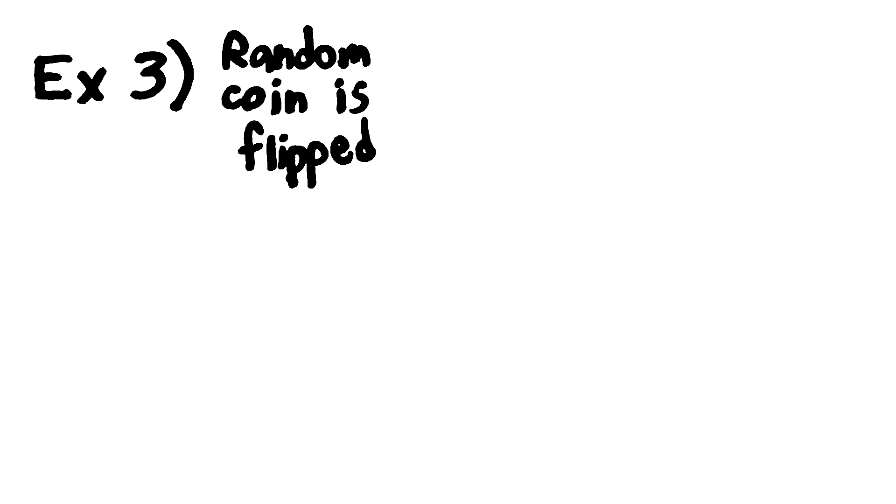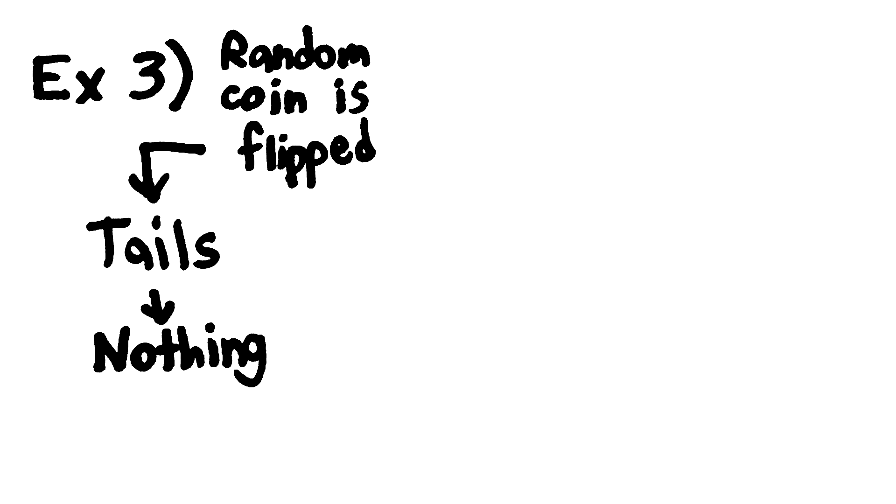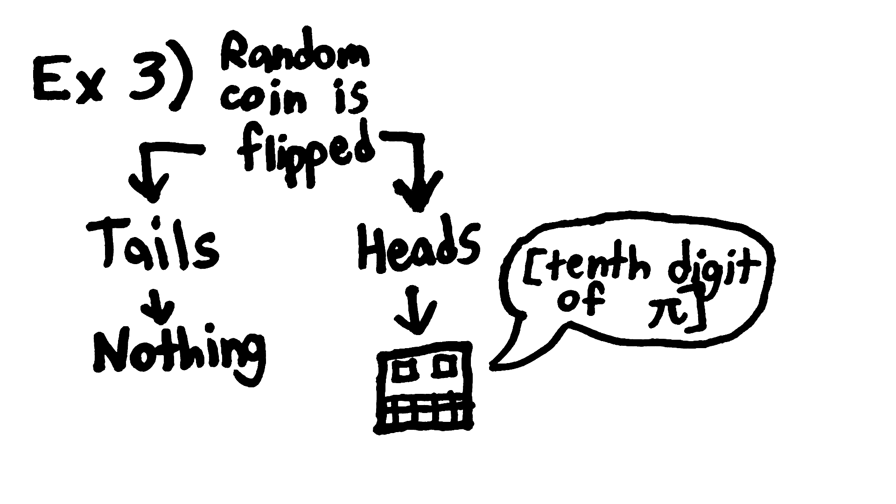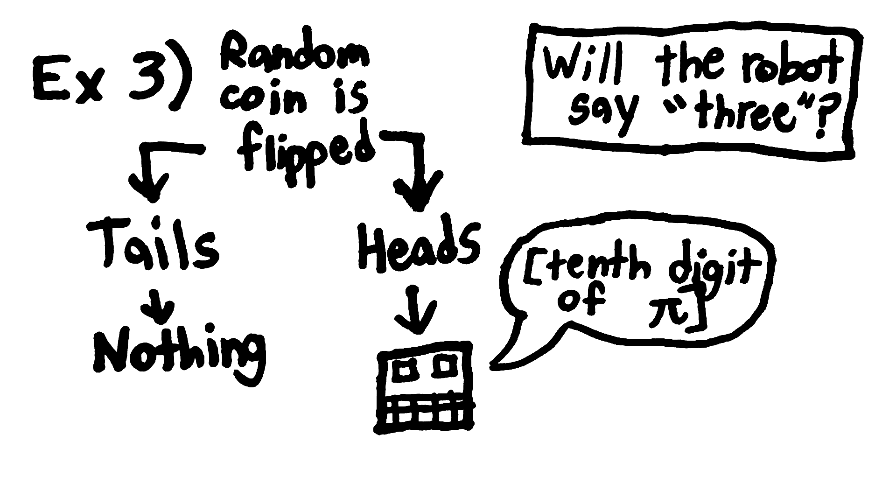I flip a truly random coin. If it lands on tails, nothing happens. If it's heads, a robot says the tenth digit of pi. Will the robot say 3?